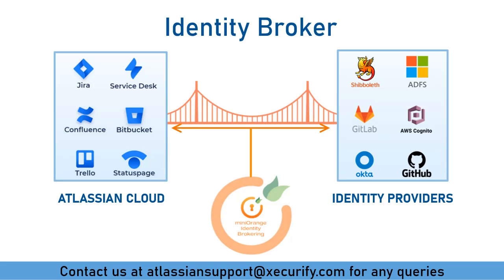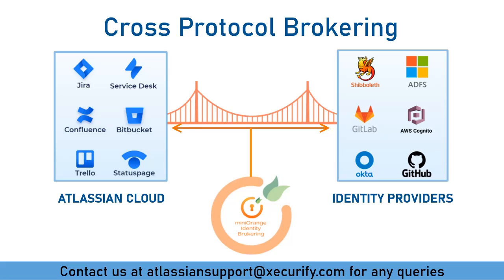MiniRange IDP supports cross-protocol brokering, which means in our case we can configure Atlassian Cloud, which supports SAML protocol, with any identity providers that may support other SSO protocols like OAuth/OIDC, JWT, LDAP, etc. If SAML is supported by your identity provider, you can still use brokering to leverage the features of MiniRange Identity Broker.